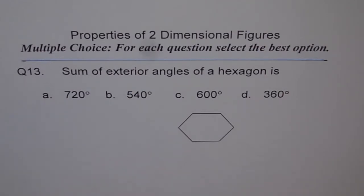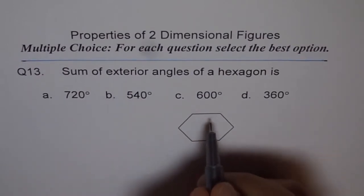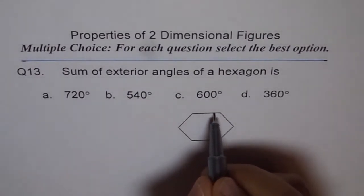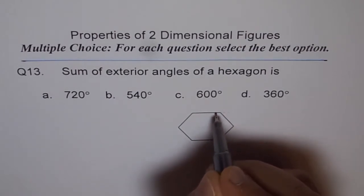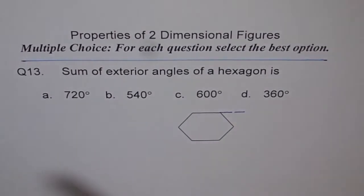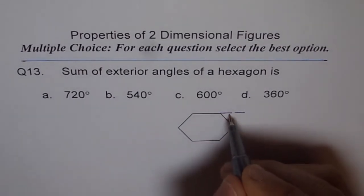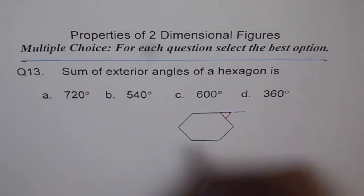Now select your answer and then look into my solution. Here is my solution. I will take this opportunity to teach you what is an exterior angle. If you see, this is a hexagon here, and if I extend the side like this, then the angle which I get here is the exterior angle.